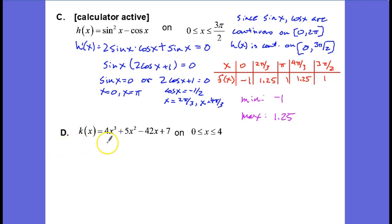In example 3 part D, we again have a polynomial, this time a cubic equation on the closed interval from 0 to 4.